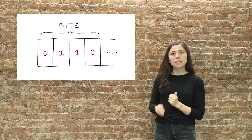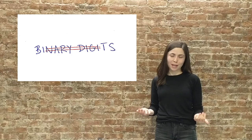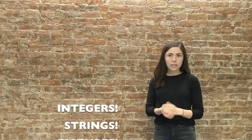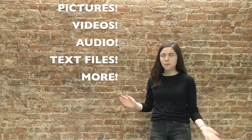So getting back to our slots, individual zeros and ones are called bits, which is just an abbreviation for binary digits. Once we have enough bits in memory we can represent things like integers, strings, pictures, videos, and more.